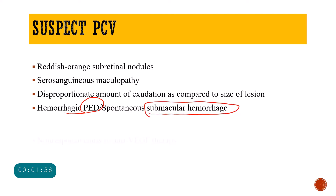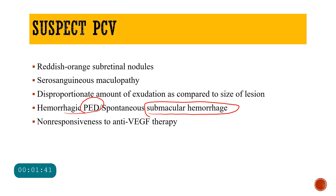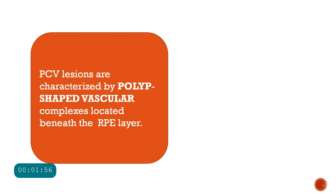Another important indicator is non-responsiveness to anti-VEGF therapy. If the patient is being treated as AMD and is not responding to VEGF therapy given every month, then you have to suspect that maybe the patient has polypoidal choroidal vasculopathy.